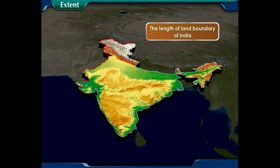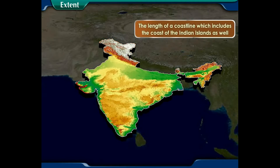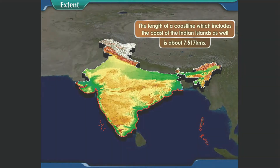The length of land boundary of India is about 15,200 kilometers and a coastline, which includes the coast of the Indian islands as well, is about 7,517 kilometers.